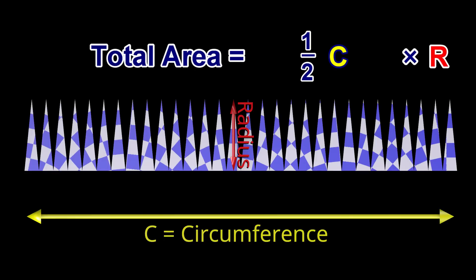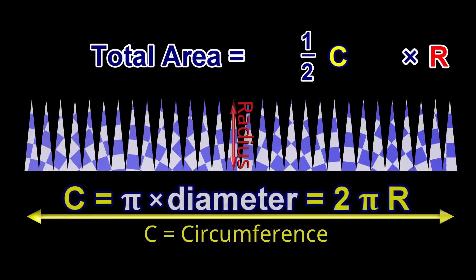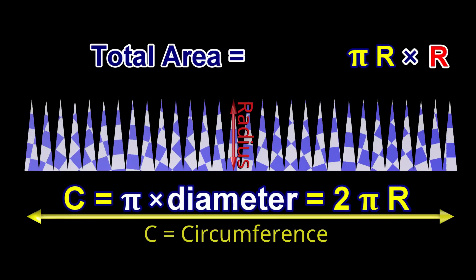The circumference, c, is equal to pi multiplied by the diameter. The diameter is equal to the radius multiplied by two. Therefore, in the equation for the total area, we can replace the circumference, c, with two pi r. The two in the numerator cancels out the two in the denominator. We replace r multiplied by r with r squared.